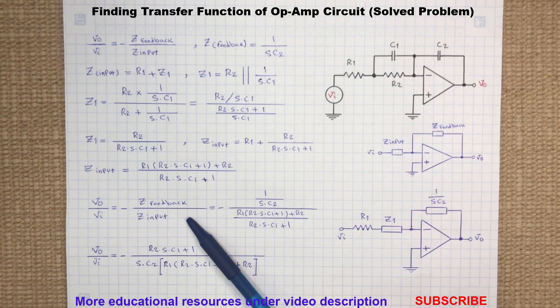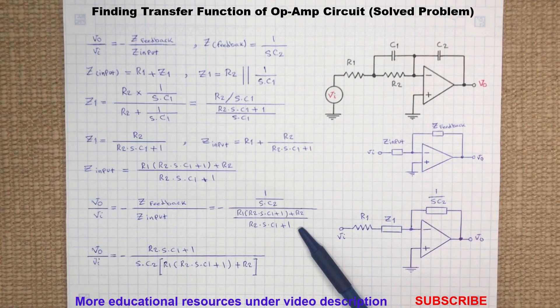Finally, the transfer function VO to VI equals the feedback impedance over the input impedance. After the simplification and rearranging the denominator and numerator, we obtain the following result.